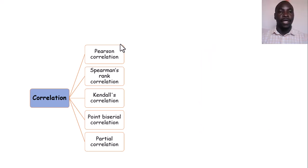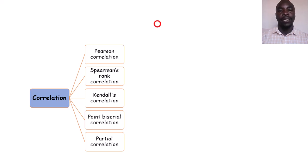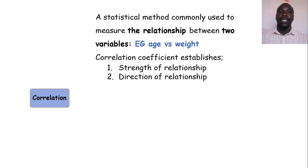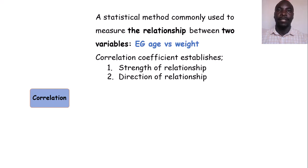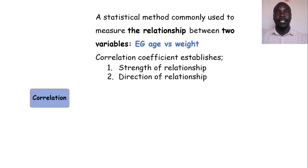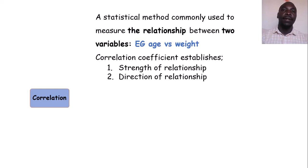There are many types of correlation analysis out there. But first, what is correlation analysis? Correlation analysis is basically a statistical method used to measure the relationship between two variables, usually continuous variables. For example, you have collected age and weight of participants and you're asking yourself: is there a relationship between one's age and their weight? Correlation would be appropriate in that situation.